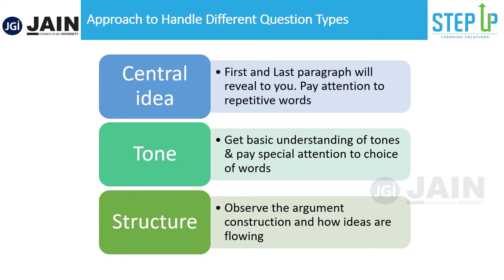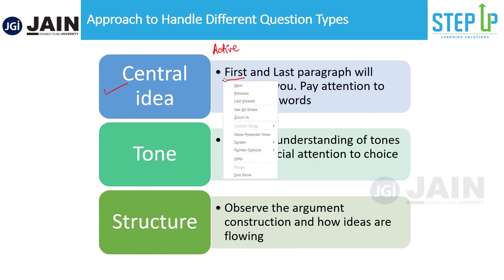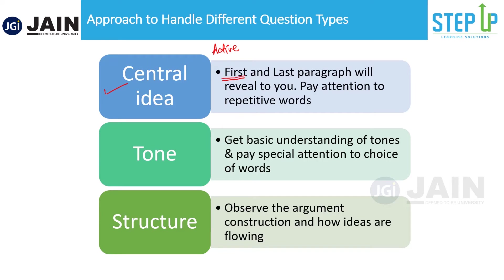There are three types of big picture questions. The first is the central idea, primary purpose, or main idea question. These are very straightforward — if you've read the passage carefully with active reading, you'll obviously notice the central idea. Typically, right from the first paragraph it's important to understand what the central idea is. The first paragraph and the last paragraph are very important — if you read those two carefully, 95% of the time you'll figure out the central idea.